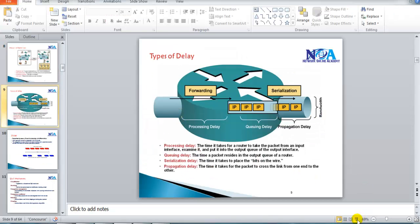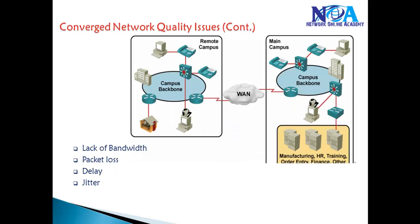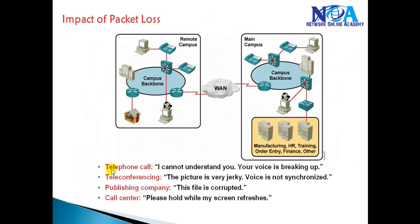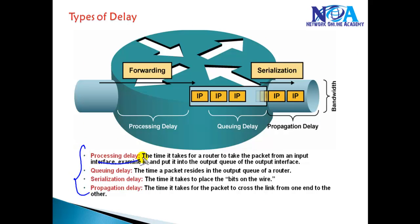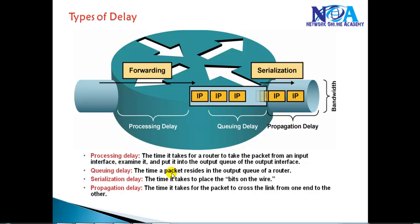These are the general problems that occur with network congestion. The first is lack of bandwidth, the second is packet loss. The third possibility is delay. Delay comes in different types: processing delay — the time taken by the device to process packets; queuing delay — how long packets wait in the queue before being sent; and propagation delay — the time taken to actually transmit.